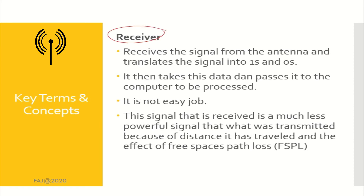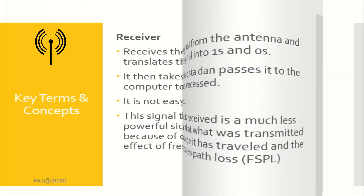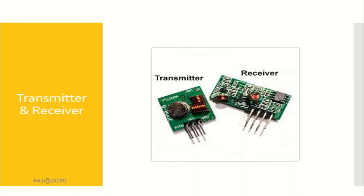Receiver will receive the signal from the antenna and convert the signal into data. Data consists of ones and zeros — it's a computer language. This is an example of transmitter and receiver chips.